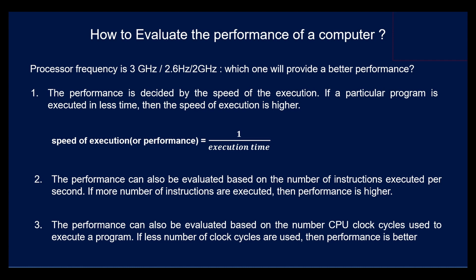The performance is decided by the speed of execution. If a particular program is executed in less time, then the speed of execution is higher. That means the speed of execution or performance of a computer is inversely proportional to execution time. So it can be given as: speed of execution = 1 / execution time.